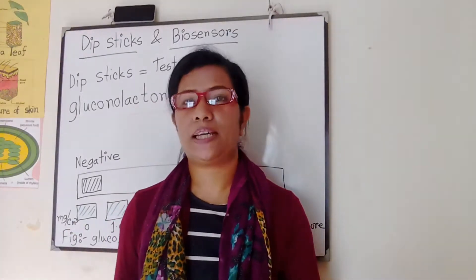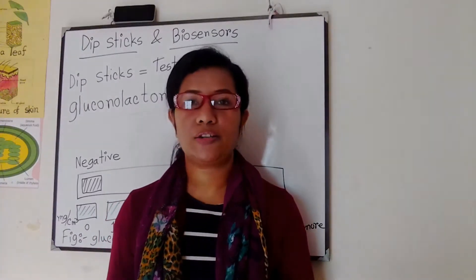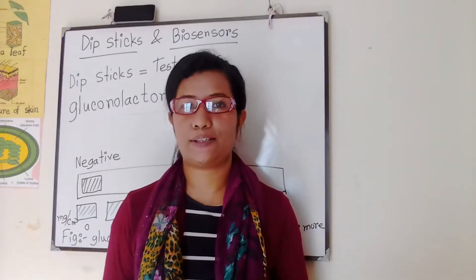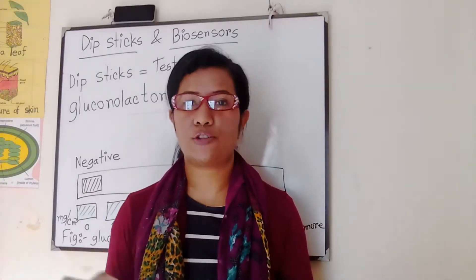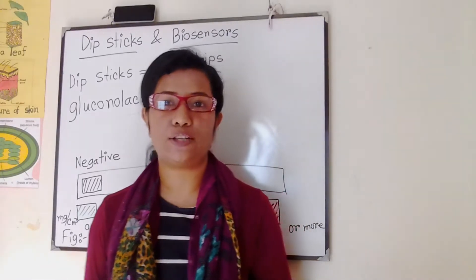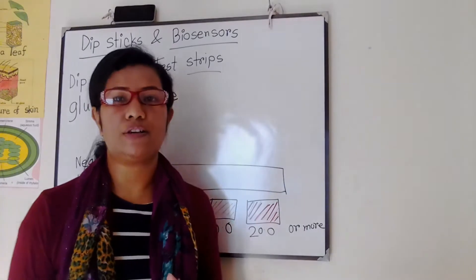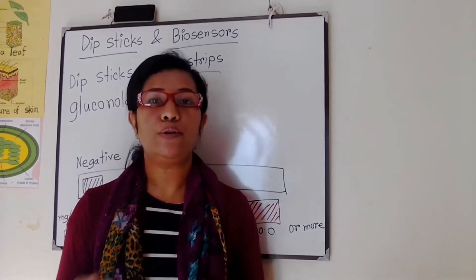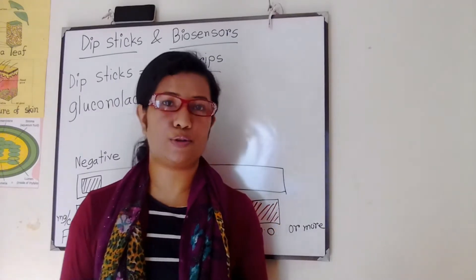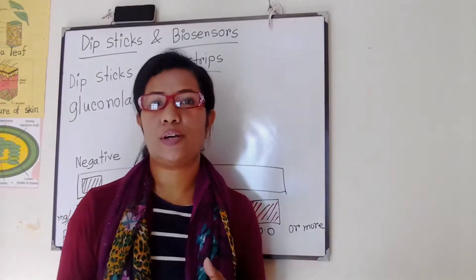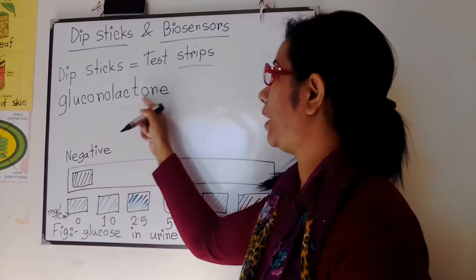Dipsticks for detecting glucose contain the enzymes glucose oxidase and peroxidase. These two enzymes are immobilized on a small pad at one end of the stick. The pad is immersed in urine, and if it contains glucose, glucose oxidase catalyzes a chemical reaction in which glucose is oxidized into a substance called gluconolactone.